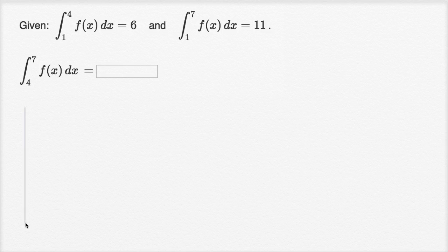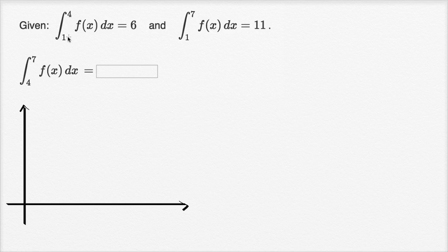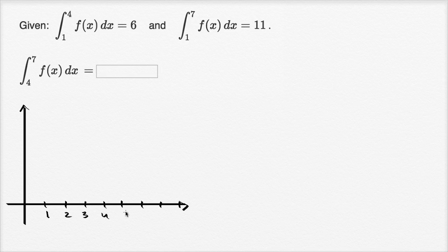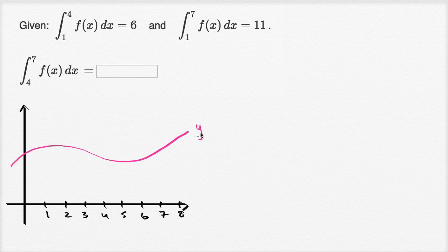So that's our y-axis and this is our x-axis. All the action is happening from x going from one to seven, so we mark off one through seven on the x-axis. Let me just draw the graph y equals f of x — I'm just going to draw something arbitrary here. So let's say the graph of y equals f of x looks like that. Let me label my axes: that's the x-axis, that is the y-axis.